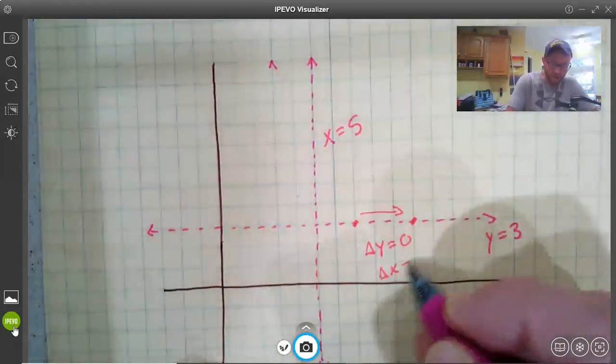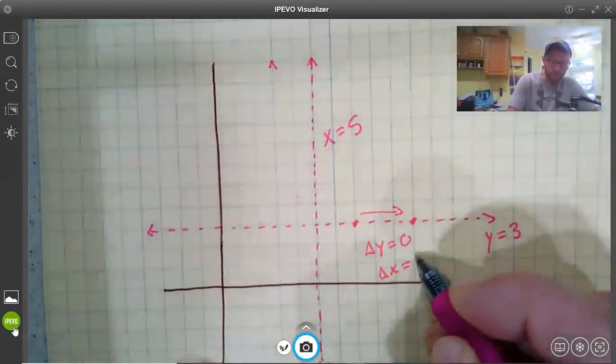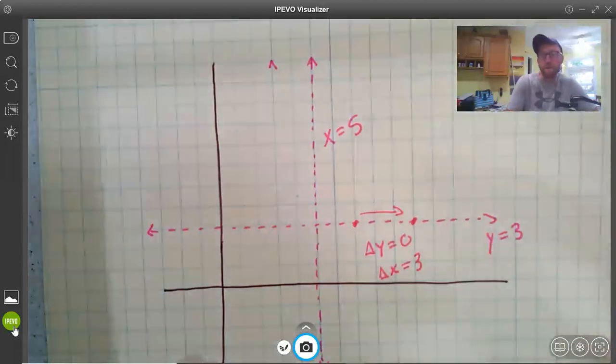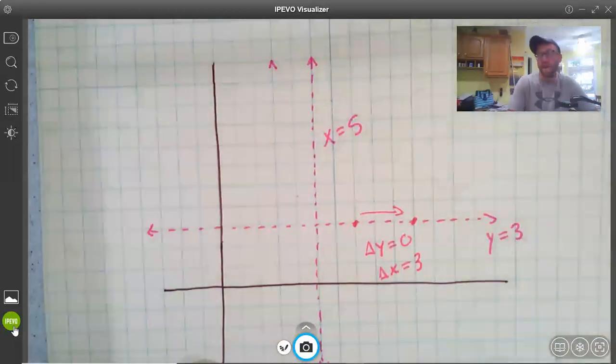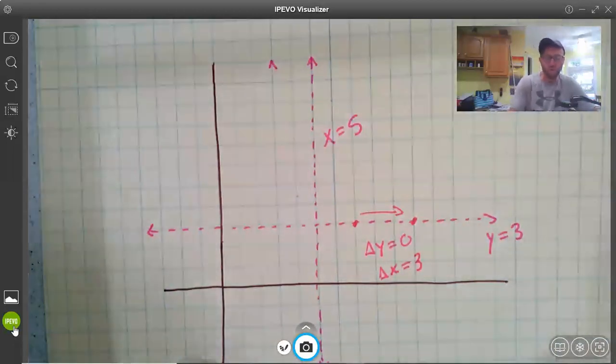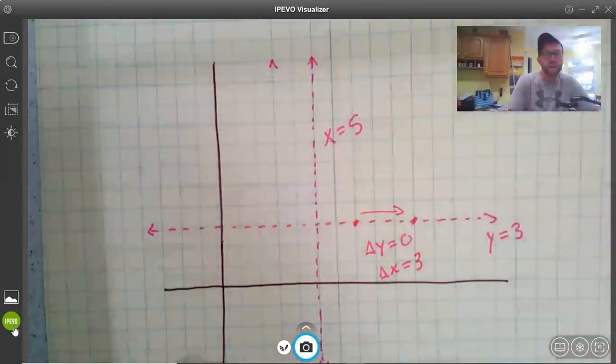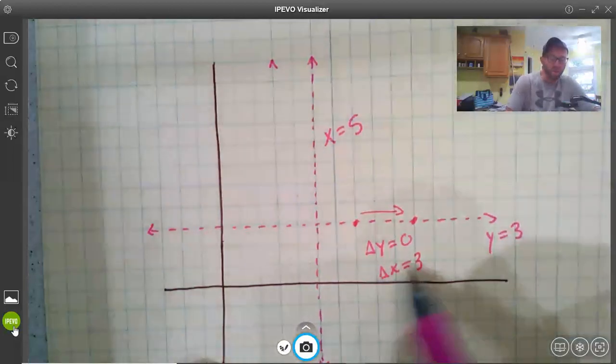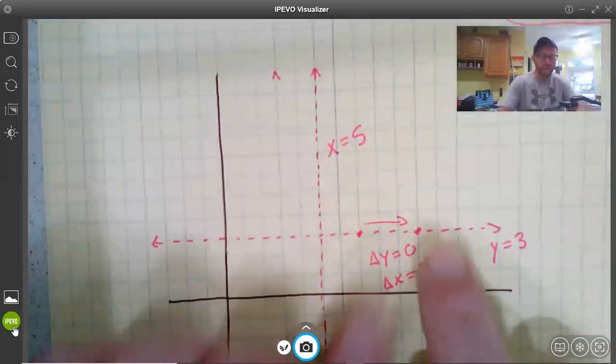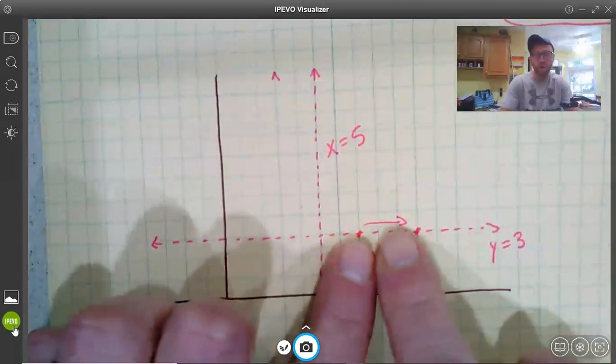And its change in x, well from this point to this point is a positive 3, or it could be a negative 3, or I could have picked any two points. It could be 100, 3 fourths, whatever. All sorts of different changes in x could be chosen, but no matter what I choose as my change in x, or how far apart these points are, how close together they are.